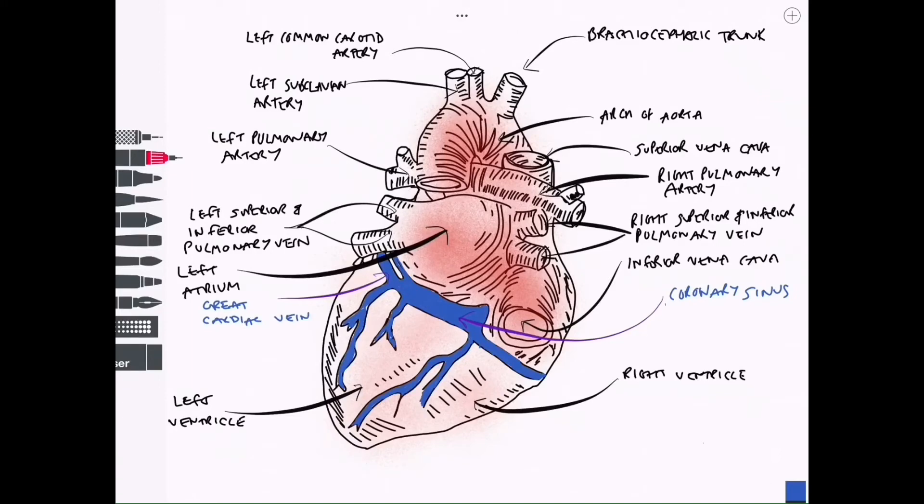So the next vein which is the major tributary into the coronary sinus is the great cardiac vein. This originates at the apex of the heart, follows the anterior atrioventricular groove from the left hand side and therefore comes from the anterior surface to drain into the coronary sinus.